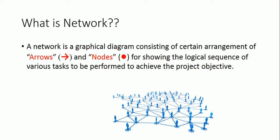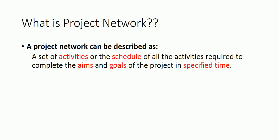A network is a graphical diagram consisting of a certain arrangement of arrows and nodes for showing the logical sequence of various tasks to be performed to achieve a project objective. A project network can be described as a set of activities, or the schedule of all the activities required to complete the aim and goal of the project in a specified time.